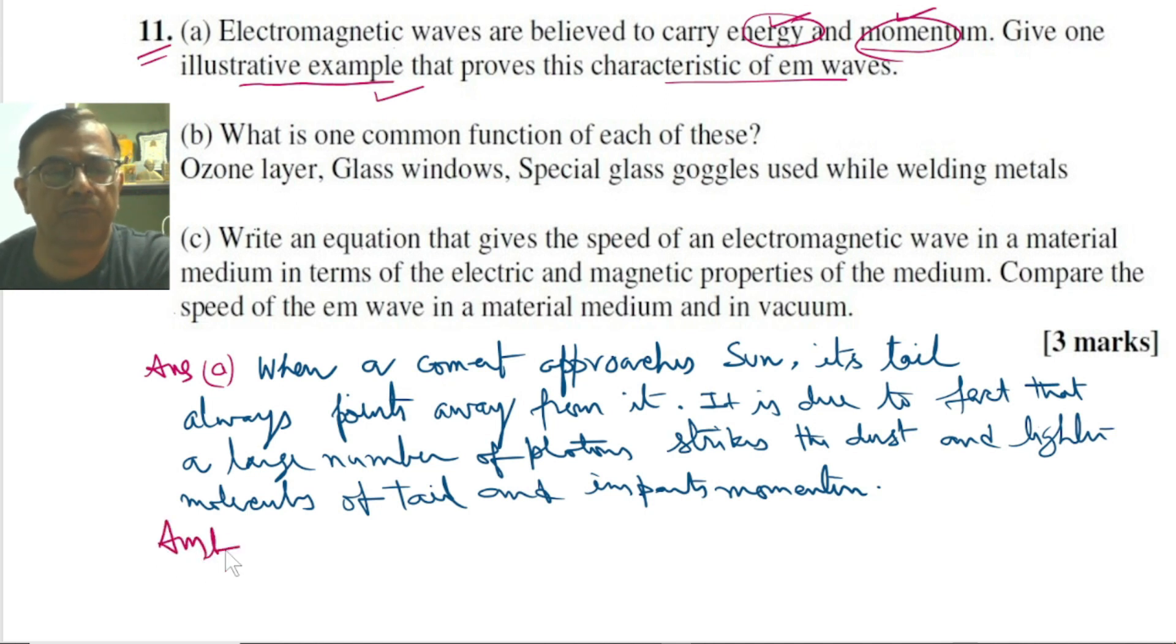Now answer B. In this part of the problem we are supposed to tell one common function of ozone layer, the glass window, and the special glass goggles used while welding metals.